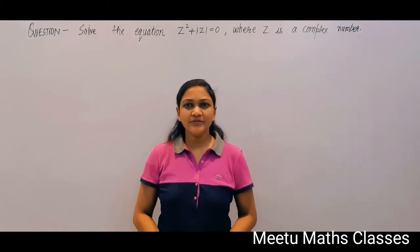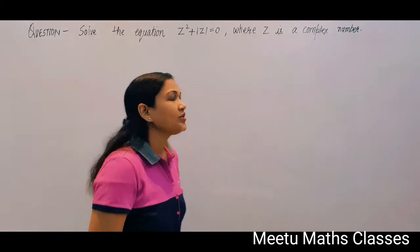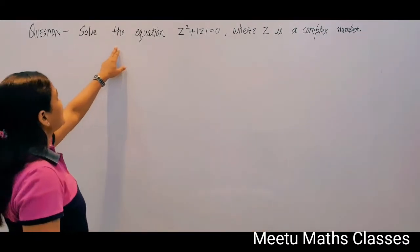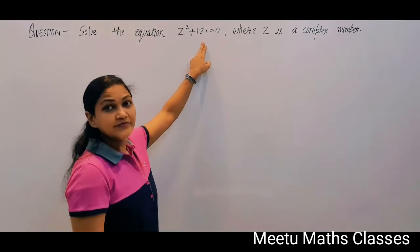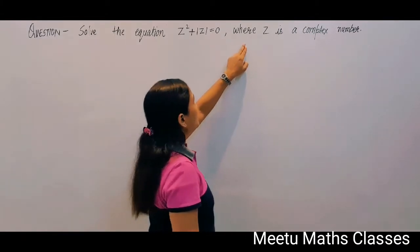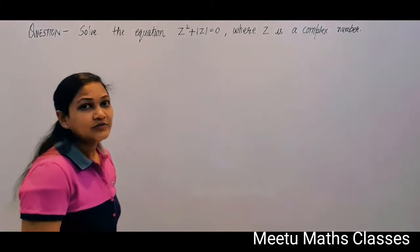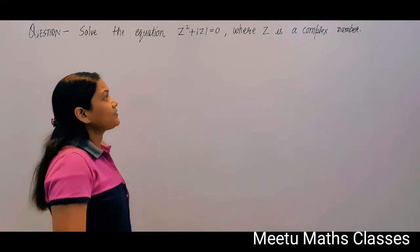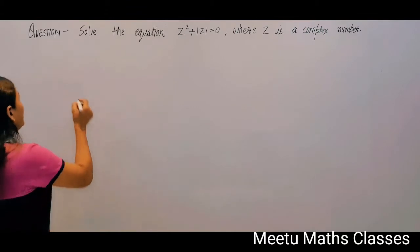Hello students, welcome to maths classes. Your question is: solve the equation z² + |z| = 0, where z is a complex number. You are given a complex equation and you have to solve it for z.